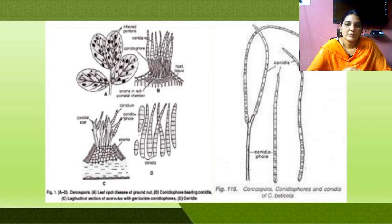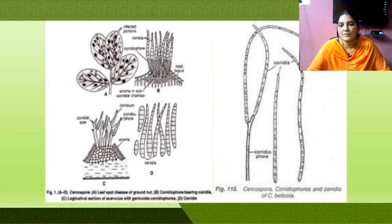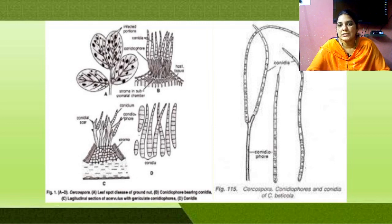The conidia separate from each other and from the mycelium, then enter into another healthy plant, form a germination tube, and cause Tikka disease in that healthy plant.